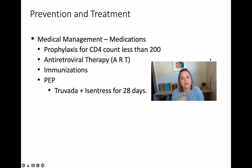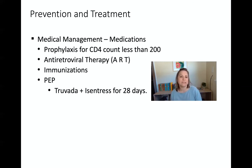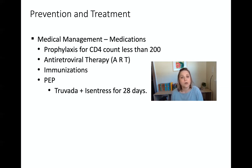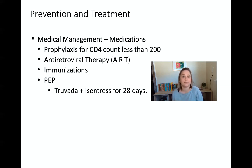For prophylaxis with CD4 counts less than 200 — meaning we know that person is at high risk for getting infections that could kill them — based on their level they'll be started on antivirals and antibacterials to try to prevent any bacterial or viral infection from taking over.